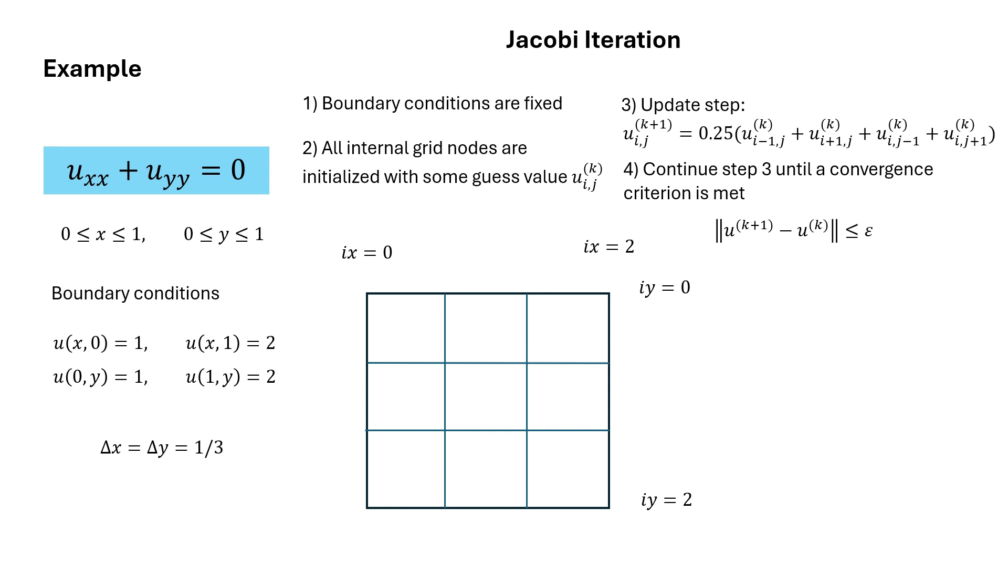So if we visually picture this problem again, we have the grid, where indices for x increase from left to right and for y from top to bottom. The values at the boundary grid nodes are known and we only want to find the values at the internal nodes, which are 4 points in this example.